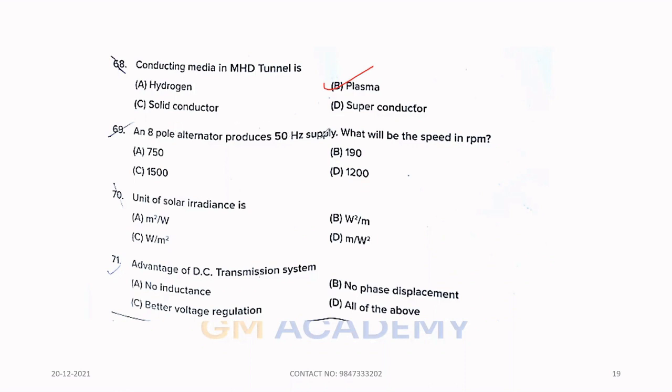Sixty-nine. An 8 pole alternator produces 50 hertz supply. What will be the speed in RPM? N equals 120F by P. The answer is 750 RPM, option A. Seventy. Unit of solar irradiance is, option C, watt per meter square.